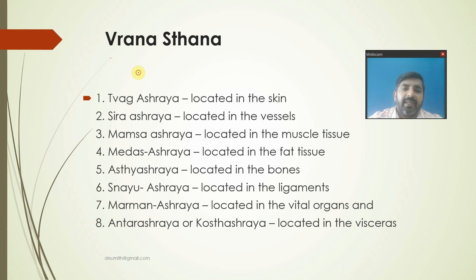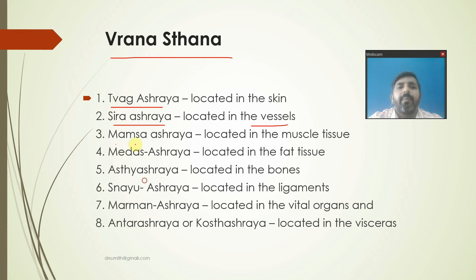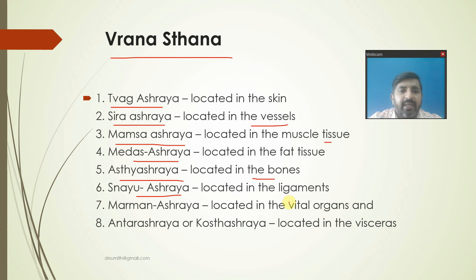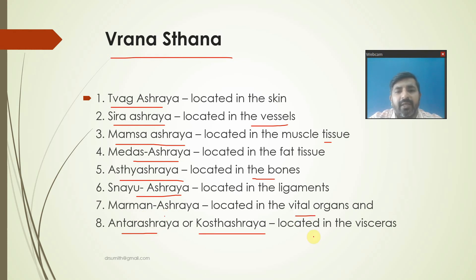The Sthana or places where ulcer can occur: Tvak Ashraya (located in skin), Sira Ashraya (located in vessels), Mamsa Ashraya (located in tissue), Meda Ashraya (located in fat/bone), Snayu Ashraya (located in ligaments), Marma Ashraya (located in vital organs), and Antra Ashraya or Koshtha Ashraya (located in visceral organs). These are the 18 locations of ulcer.